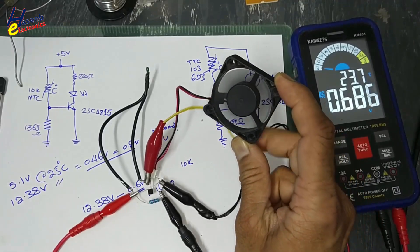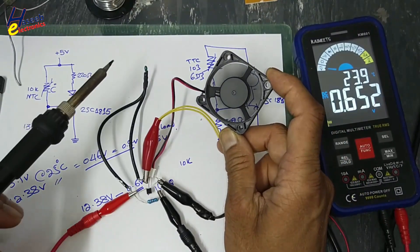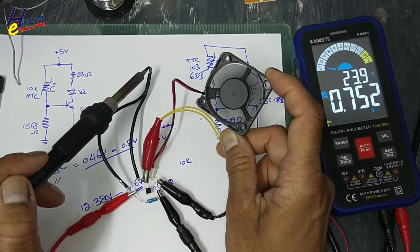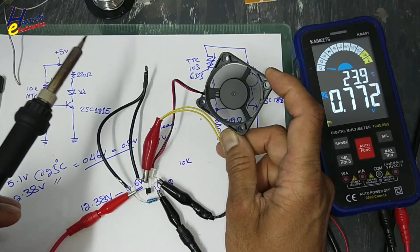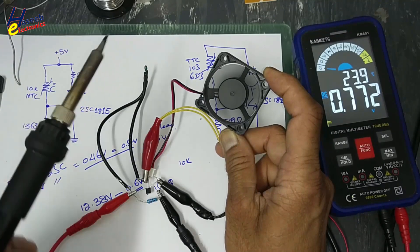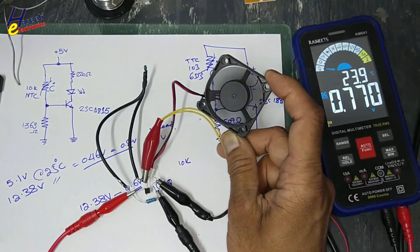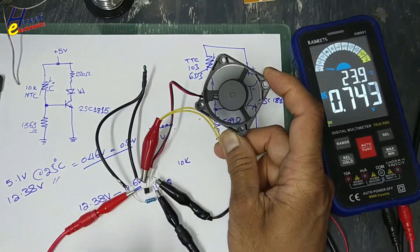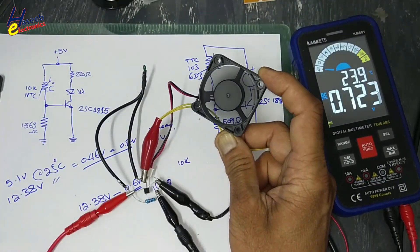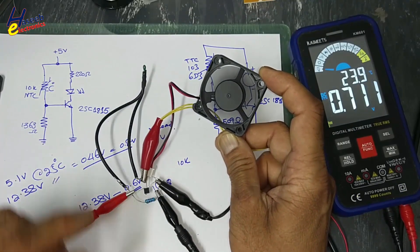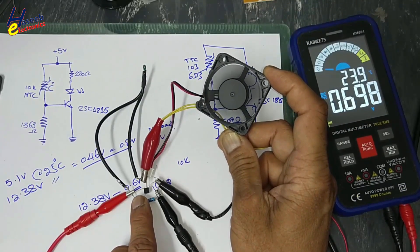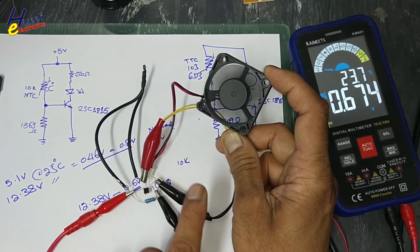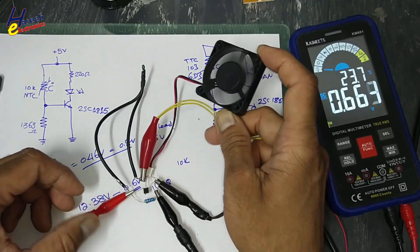This is a linear circuit. We are using the common emitter configuration of this transistor, so it will control the fan speed linearly. As the temperature increases even slightly, the speed will increase proportionally. If you want to turn the fan on only at a specific limit, we will use a 1N4148 diode at the base — the fan will remain off until that specific threshold is reached.